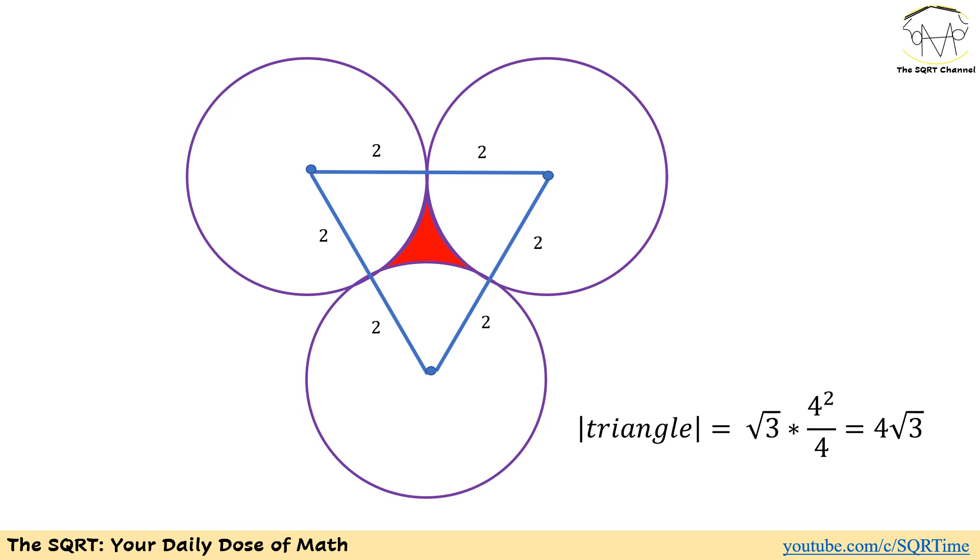Since we know the side, we are going to use the equation that you are seeing here. Basically it says radical 3 times one of the sides to the power of 2 over 4. Here the side length is 4 and we can use it and then the area of the triangle is going to be 4 times radical 3.